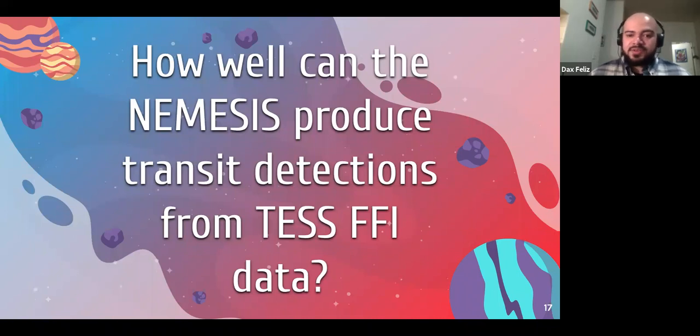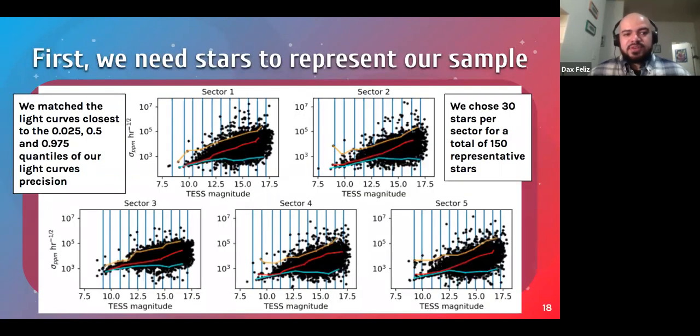So another thing we want to think about is, okay, so we have photometry, we have a way of measuring orbital parameters and constraining them. How well can the Nemesis pipeline actually produce transit detections in general? So to do this, we first needed a sample of stars that best represented our data set. So we looked at the photometric precision as a function of magnitude for the five sectors that we observed. And we looked at the light curves that had photometric precision closest to 0.025, 0.5 and 0.975 quantiles in bins of TESS magnitude. This gives us a sense of the best average and worst quality data for each sector.